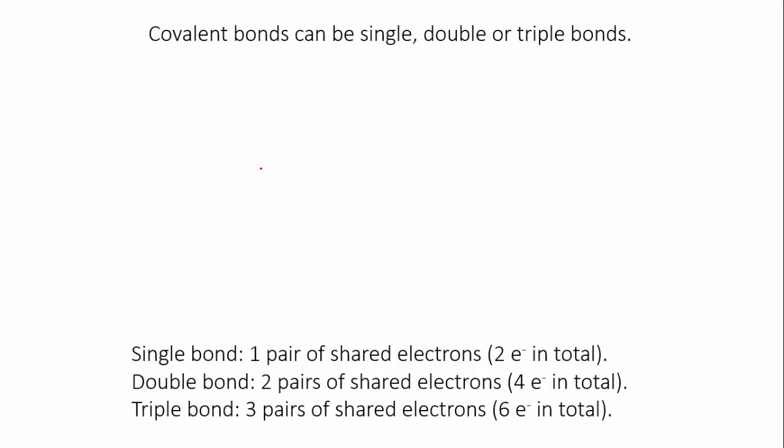So far, we've said that a single covalent bond consists of one pair of shared electrons. However, it is possible to form double and triple bonds as well.